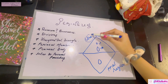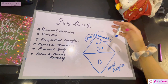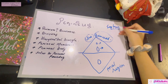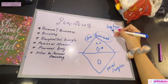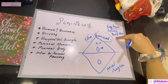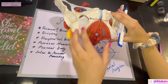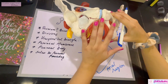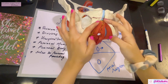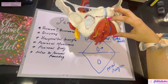Moving to the urogenital triangle: superficially there is skin — the mons pubis in females and the scrotum in males. Beneath the skin is the superficial fascia, which, similar to the abdomen, consists of a superficial fatty layer and a deep membranous layer. This deep membranous layer is called Colles' fascia. It is attached on either side to the pubic arch, posteriorly to the perineal membrane, and anteriorly is continuous with the fascia of the scrotum and penis.